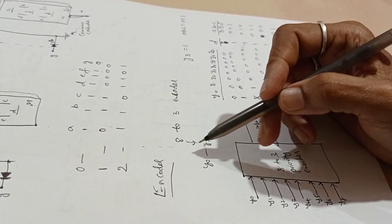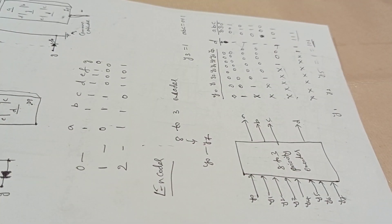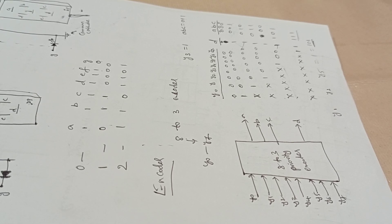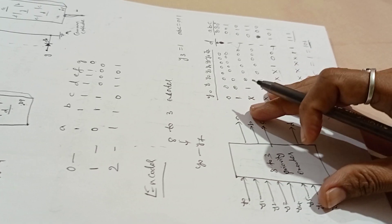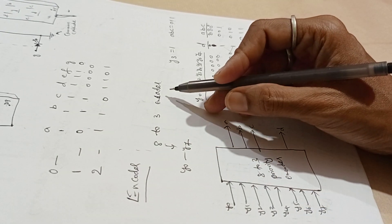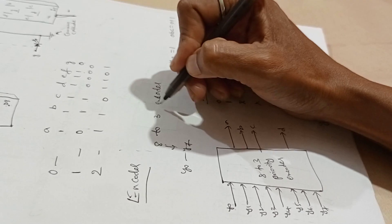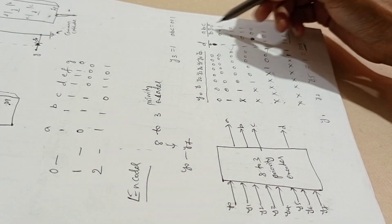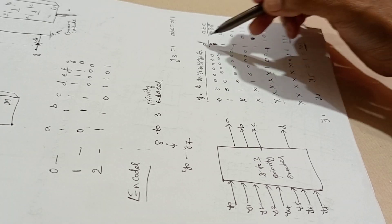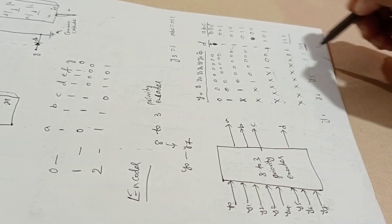Now coming to encoder. Encoder is converting active input signal to a coded output signal. This is the inverse function of a decoder. That is 8 to 3. Now we will see 8 to 3 priority encoder.